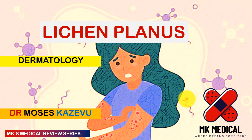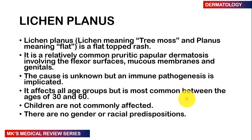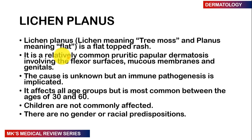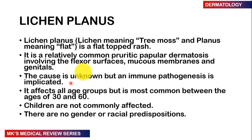Whenever you're talking about the word lichen planus, remember that 'lichen' means tree moss and 'planus' means flat, so lichen planus is essentially a flat-topped rash. It's a relatively common periodic popular dermatosis that involves the flexure surfaces as well as the mucous membranes and genitals of individuals.